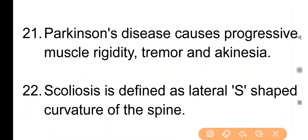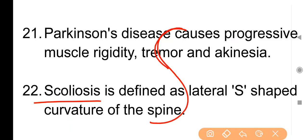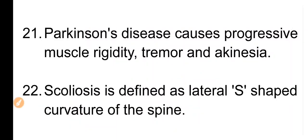Point No. 22: Scoliosis is defined as lateral S-shaped curvature of the spine. अगर किसी client में उसका spine S-shaped हो जाए — यानि lateral side से curved हो जाए, सीधे होने की बजाए — तो यह condition scoliosis के नाम से जानी जाती है।